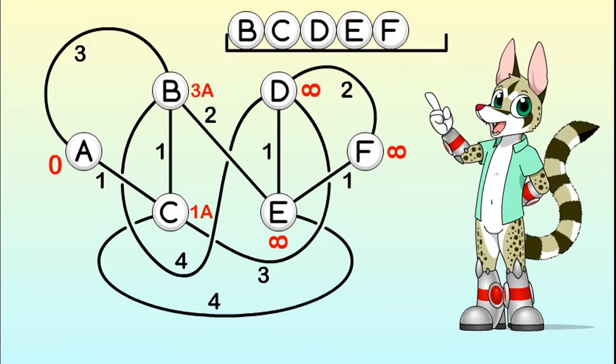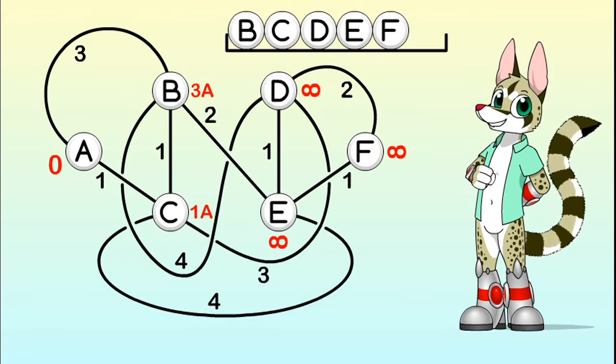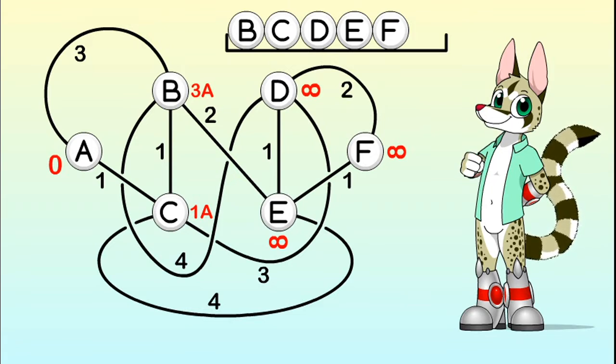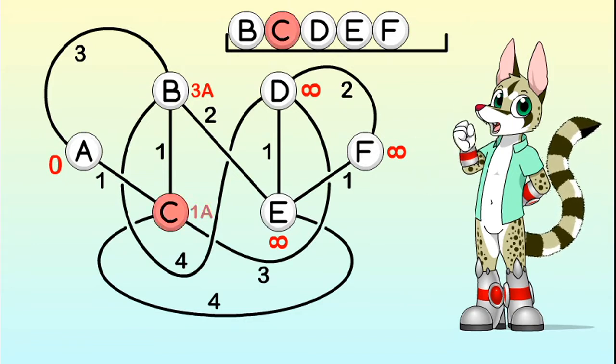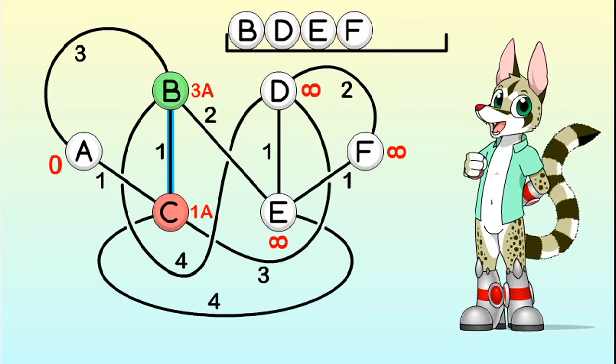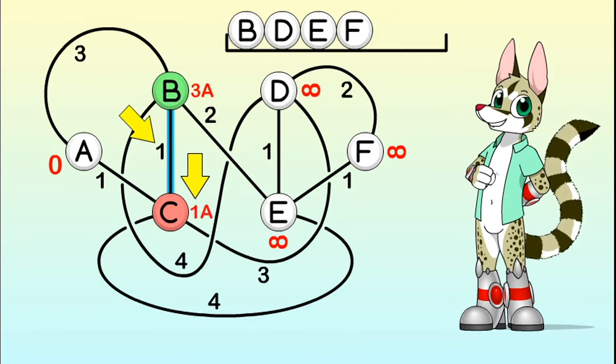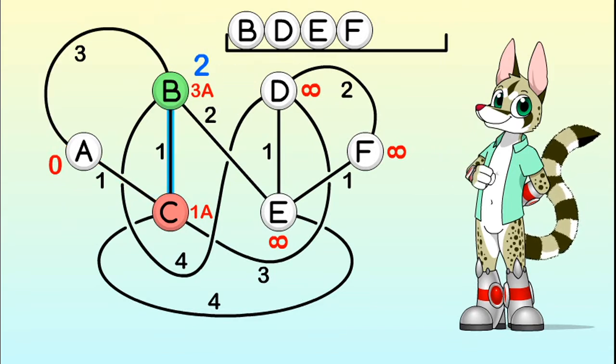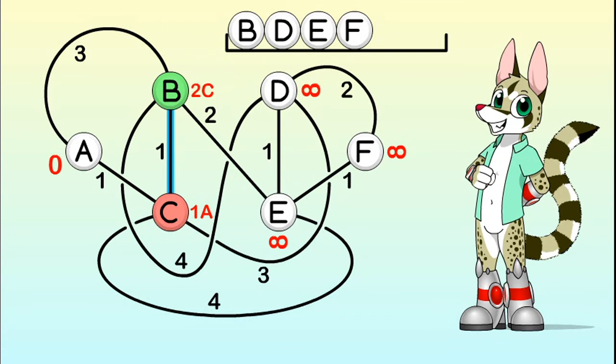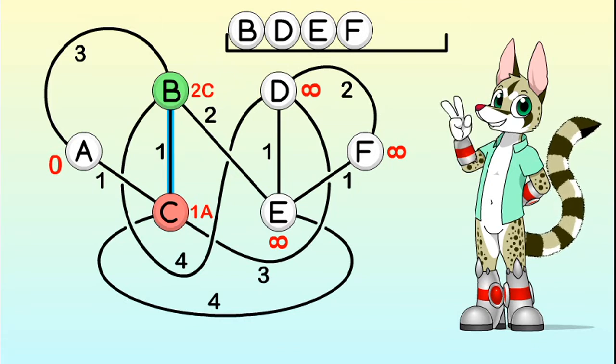So we must choose another one from the unvisited set. And we want to get the shortest possible route, so we will pick the vertex which currently has the smallest distance value. This is vertex C, with a distance of 1 unit from vertex A. From vertex C we can get to B along a 1 unit long edge. If C is 1 unit away from A, and B is 1 unit away from C, that means that we can get from A to B through C, following a 1 plus 1, 2 units long route. We were previously reaching B directly from A through a 3 units long route, so our new route is better. We can update this data to reflect that, if we reach it from C, it will only be 2 units away from A.